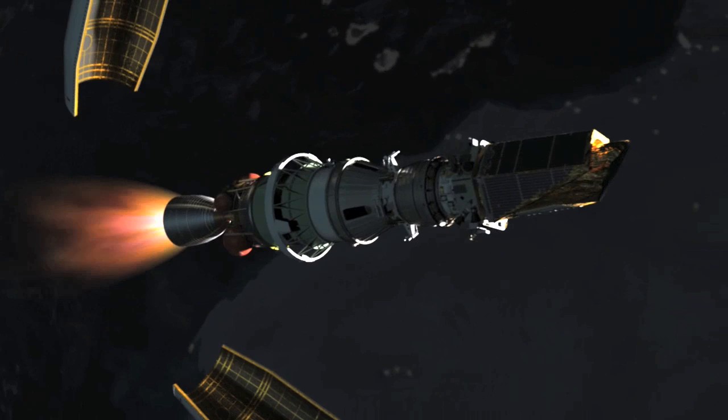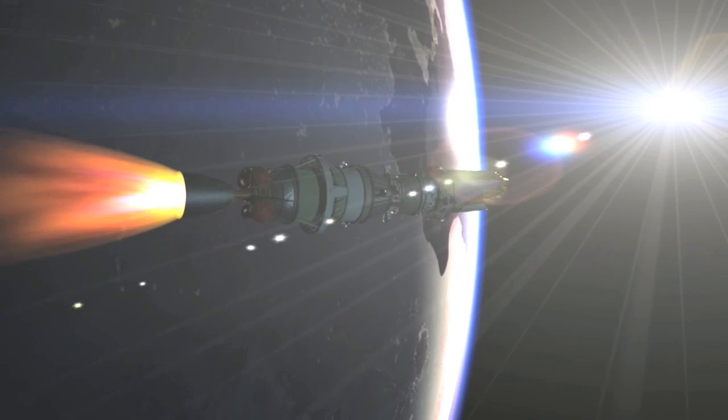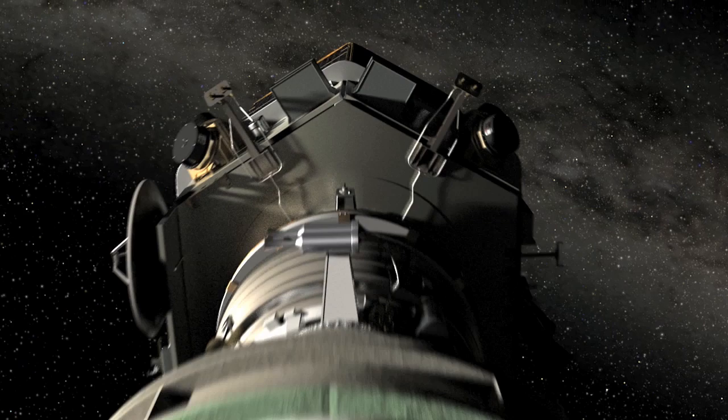The Kepler mission is designed to look at only one region of the sky for its entire lifetime. Its goal, to find terrestrial planets, defined as those one-half to twice the size of the Earth, and especially those in the habitable zone of their stars where liquid water and possibly life might exist.